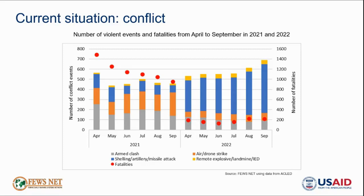More recently, despite the official expiration of the truce on October 2nd, conflict has not re-escalated. Instead, both parties of the conflict continue to operate in a period of unofficial truce alongside ongoing negotiations.